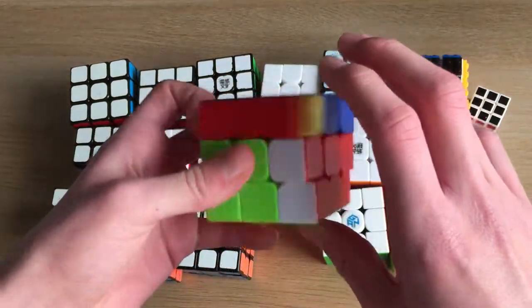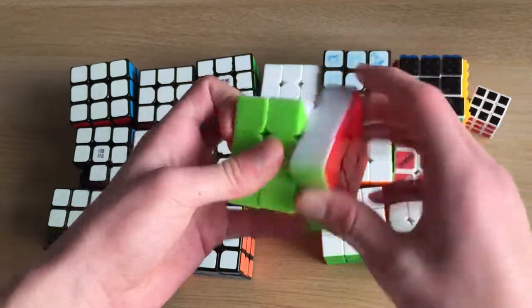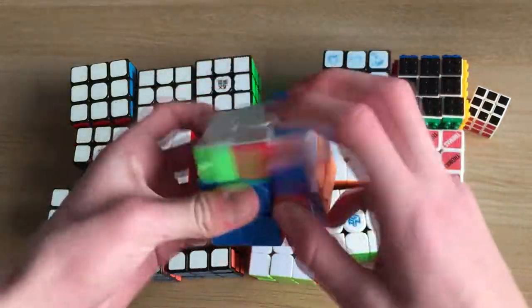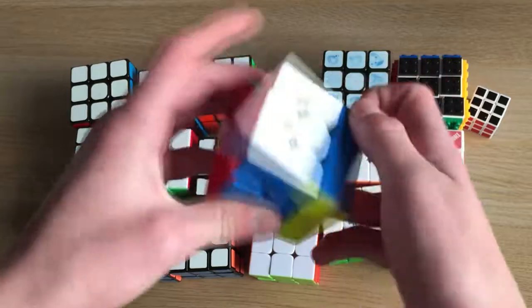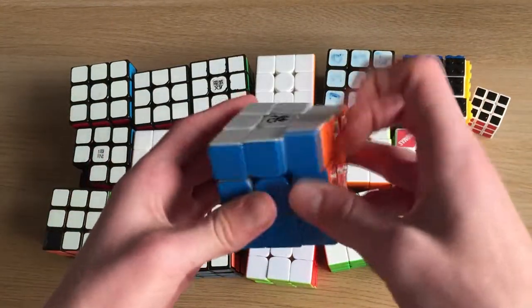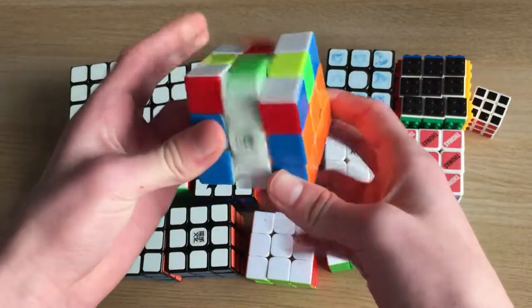Then we've got this random store-bought cube in stickerless. It turns pretty well. Then we've got the Moyu Weilong WRM, which was my main for quite a while. Very nice cube. Here we have the Dayan TengYun M, which is my current main. I really like this cube.